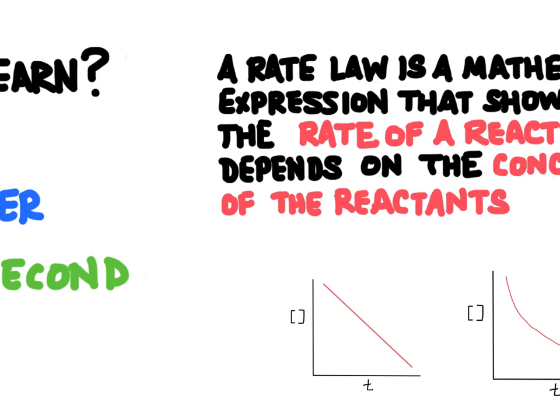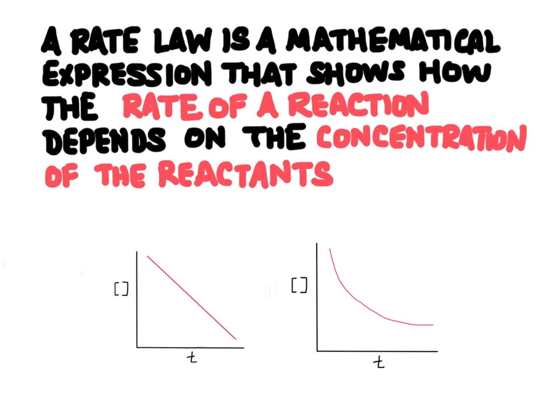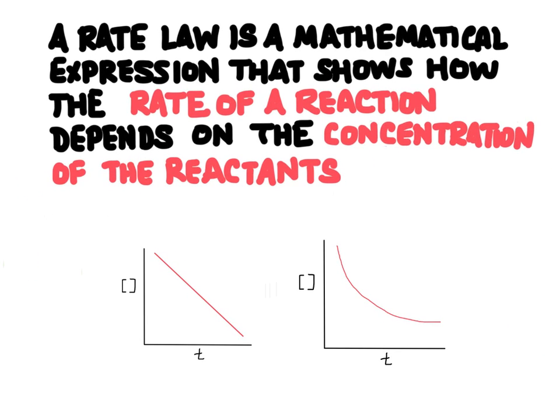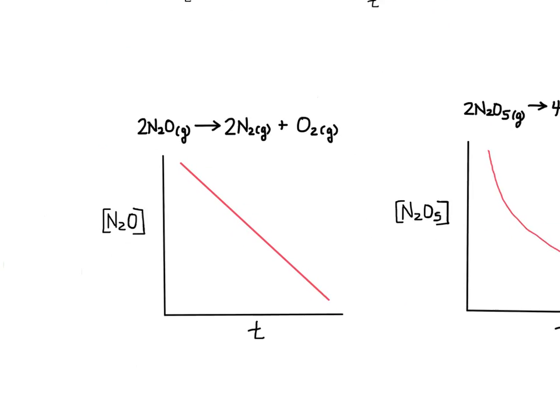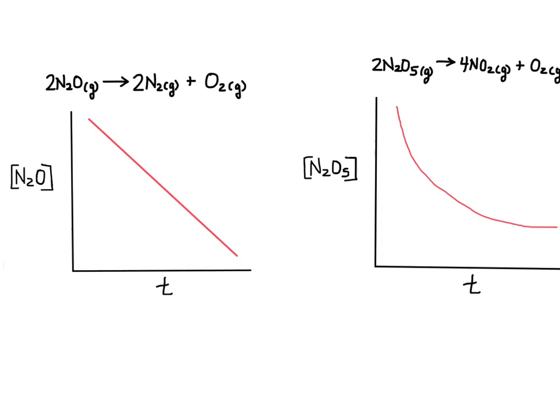What is a rate law? A rate law is a mathematical expression that shows how the rate of a chemical reaction depends on the concentration of the reactants. Sometimes the rate is dependent on the concentration of the reactants, and sometimes it is not.